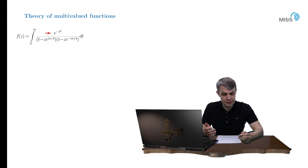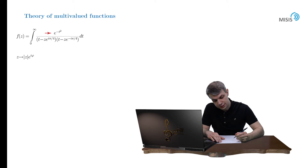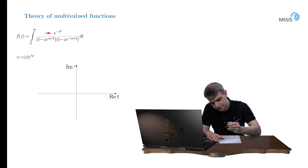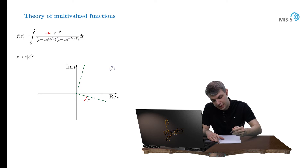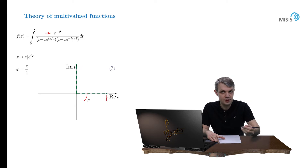But what if z departs from the real axis and moves into the complex plane? Suppose z rotates by angle phi in the counterclockwise direction. Both poles start also moving in the counterclockwise direction by angle phi. When phi equals pi/4, the lower pole reaches the real axis and the integral stops existing.